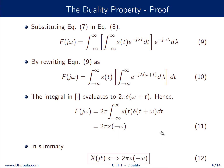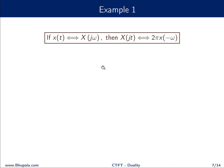In summary, we have seen that if the Fourier transform of x(t) is X(jω), then the Fourier transform of X(jt) equals 2π times x(−ω). We will now take a few examples. The duality property is stated here, and we take the first example.